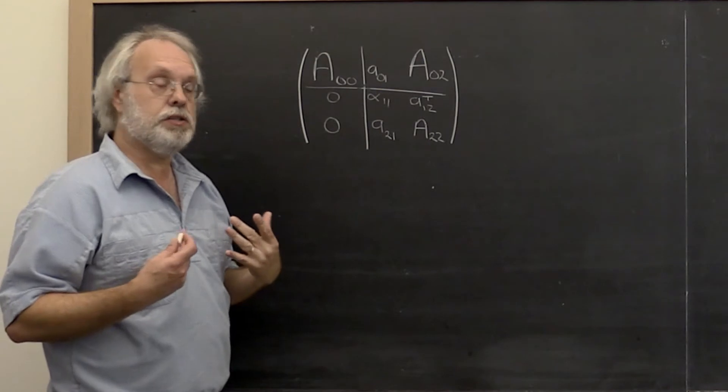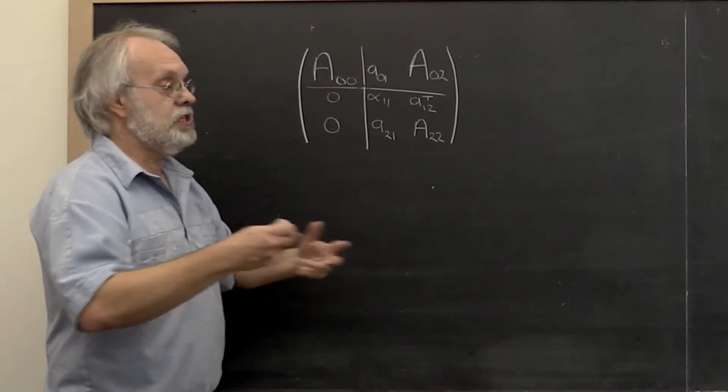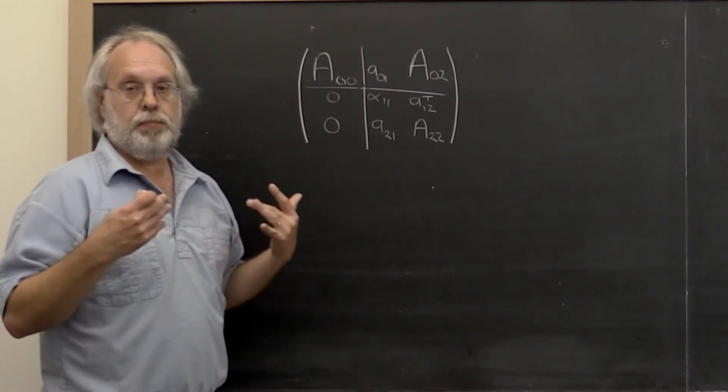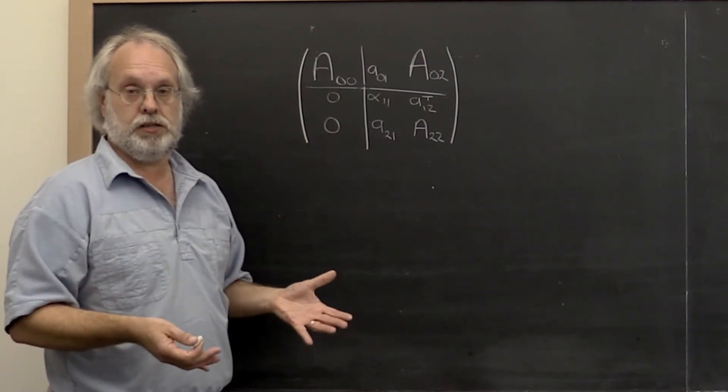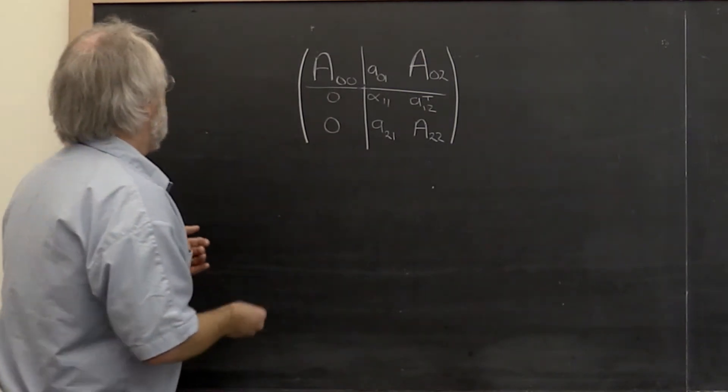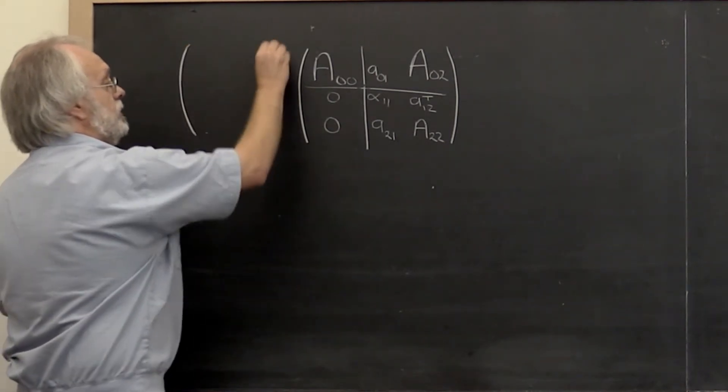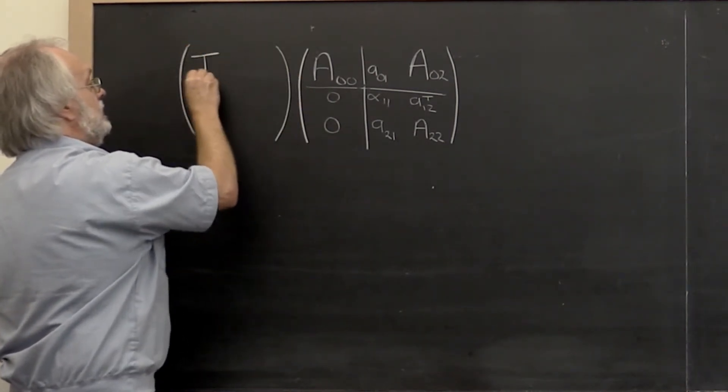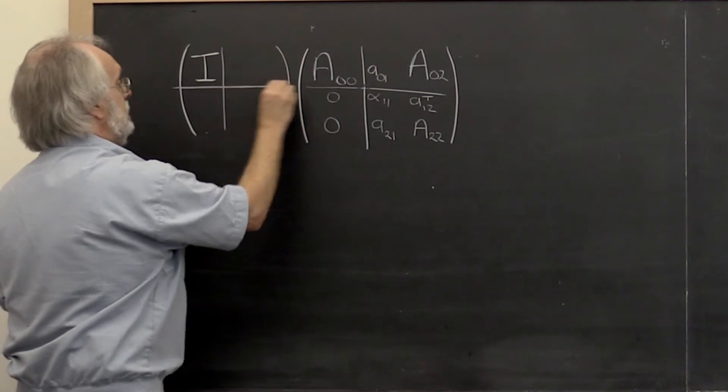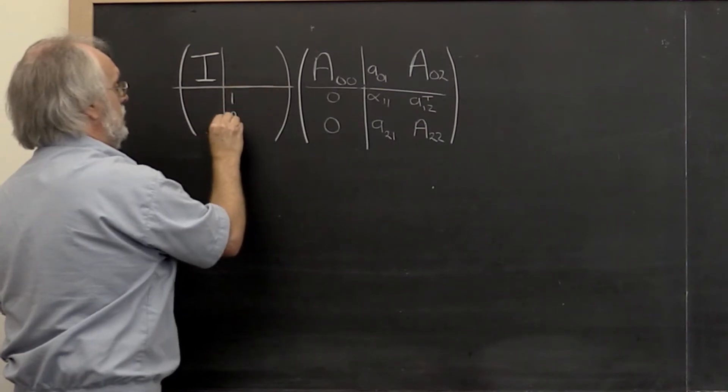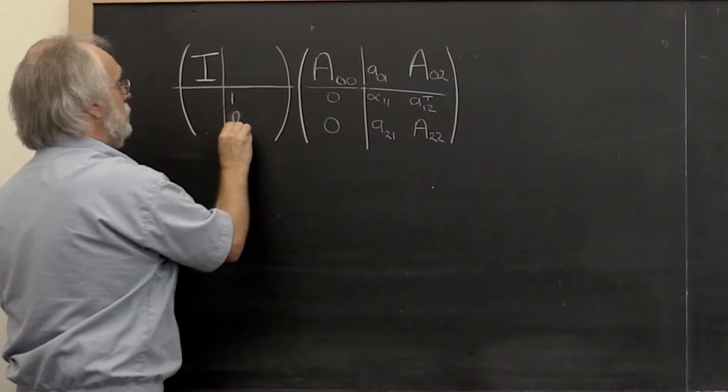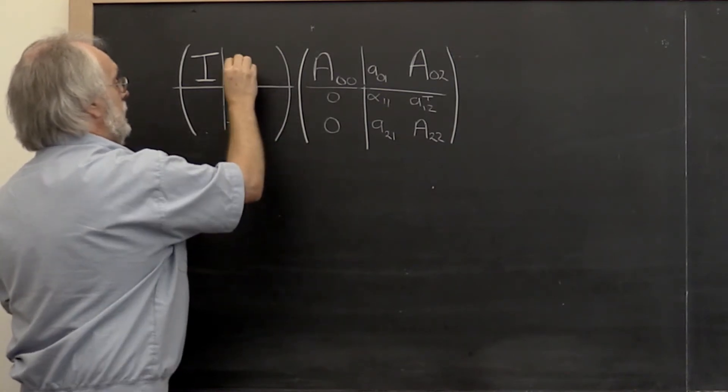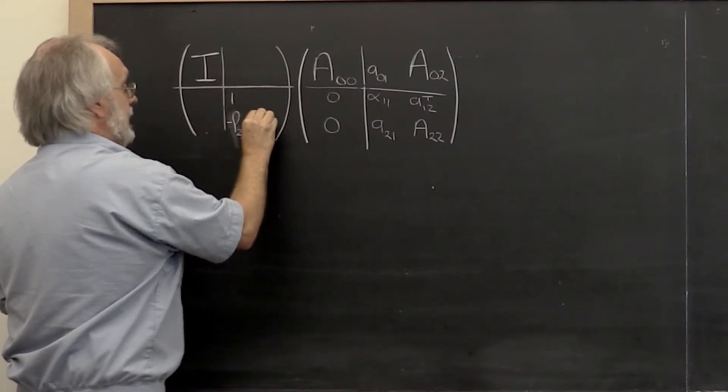Now it turns out that the operations that you perform there can be thought of as the application of a very special matrix. And what is that special matrix? That special matrix looks like this. Oops, this should be negative L21 and then the identity here.